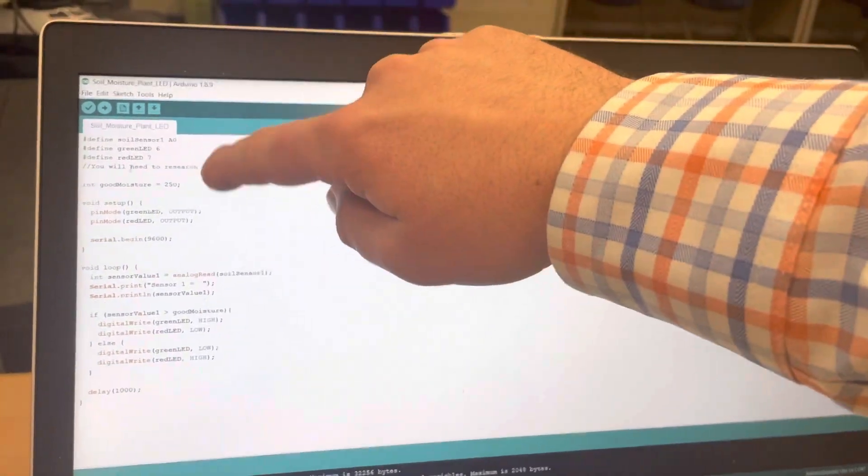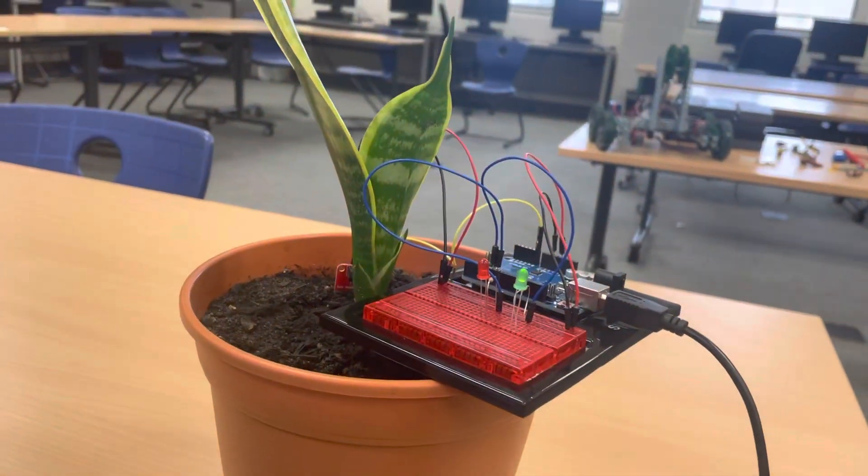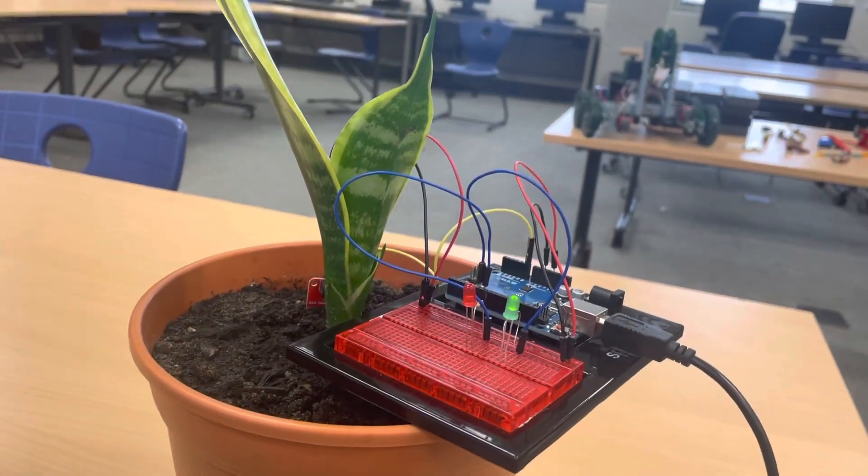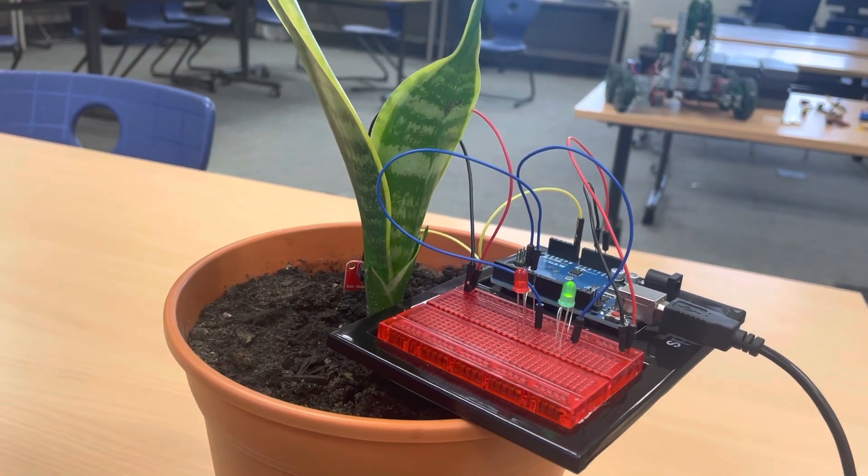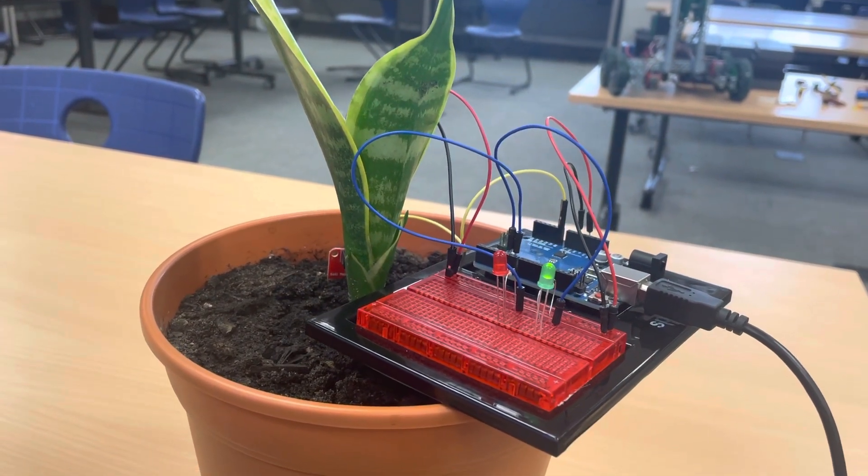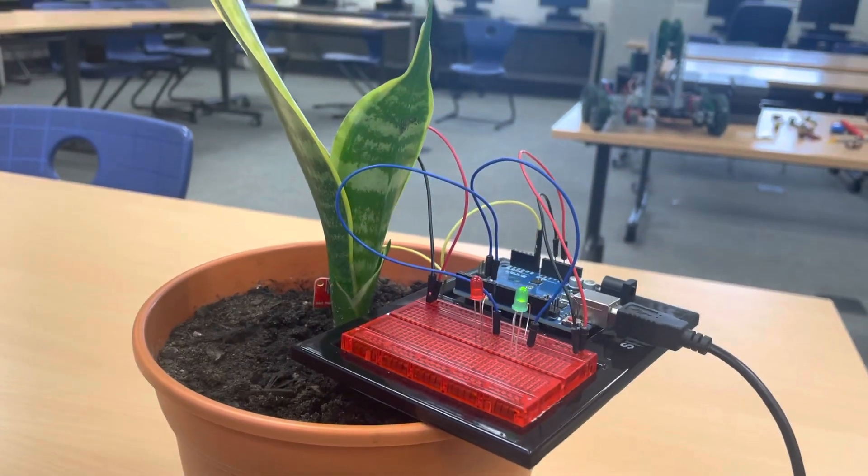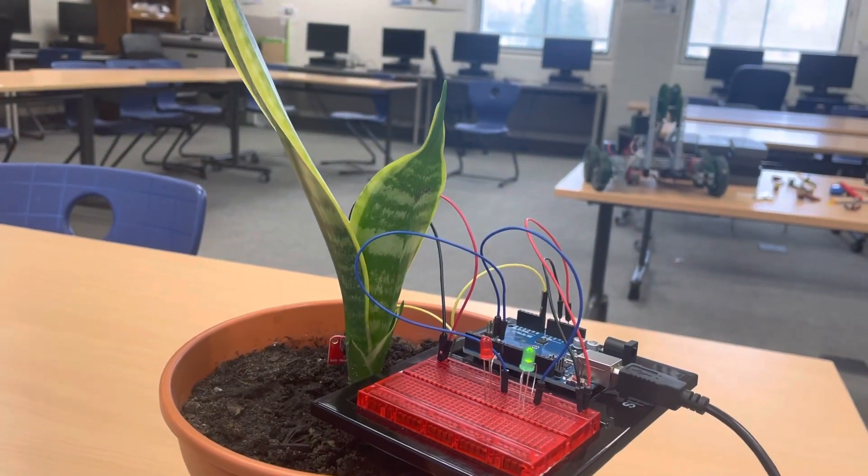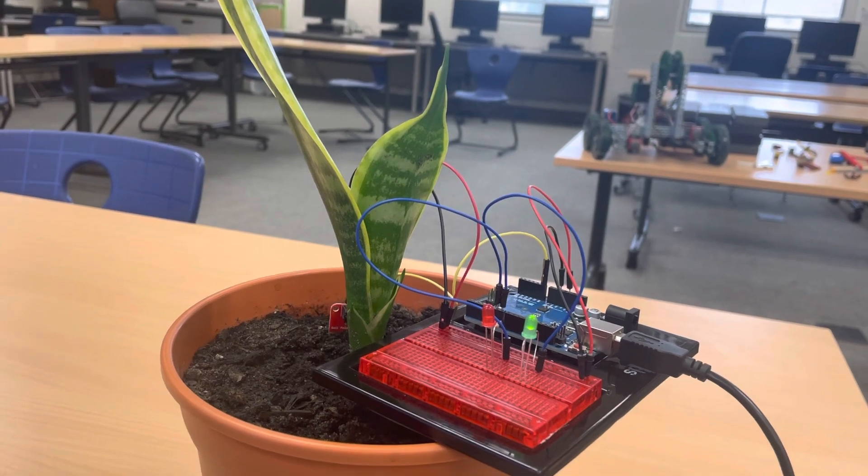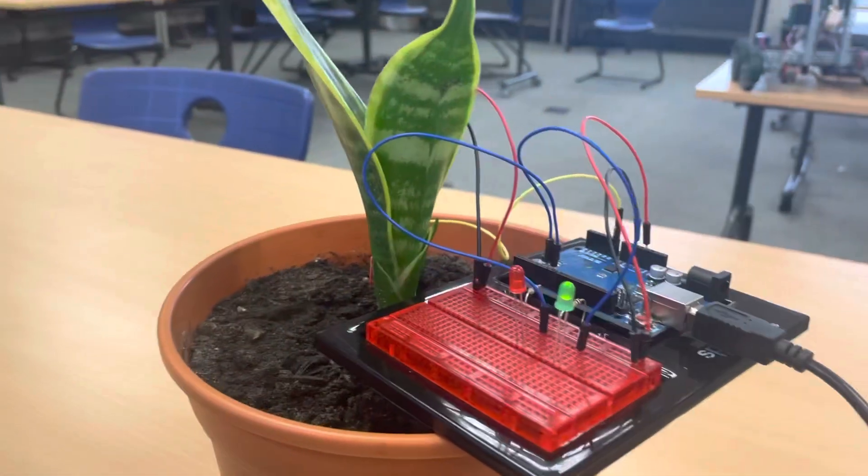I will say depending on the type of plant, you're going to have to figure out and do some research on what type of soil moisture content works best for keeping this plant alive. Now my plant is called snake's tongue or mother-in-law's tongue, and you really gotta work to kill these things.